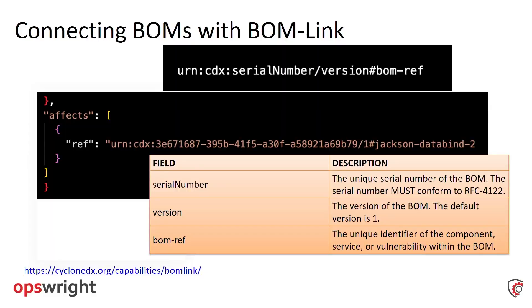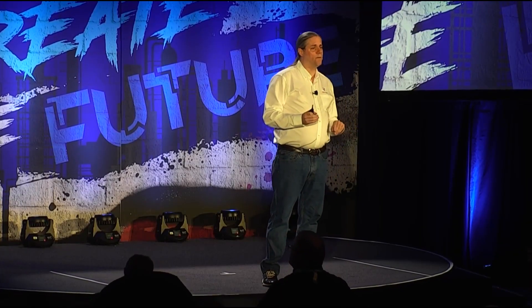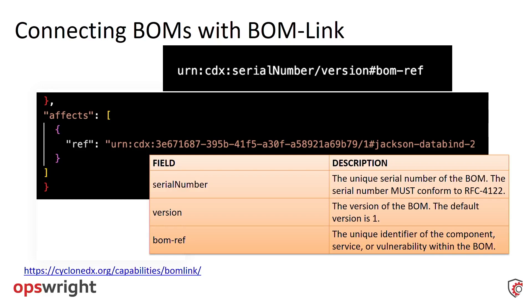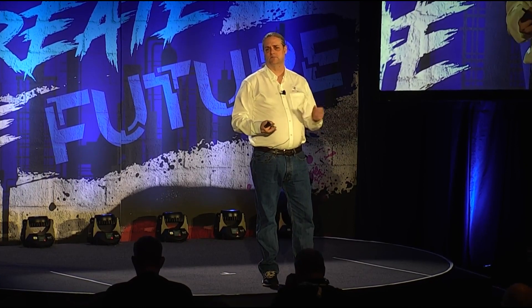Now that we have all these BOM types, how do we gain aggregate understanding? There's a concept of BOM linking — SPDX has it too, though SPDX is largely a software bill of materials approach. BOM linking allows us to create connective tissue between BOMs and establish relationships between components. The CycloneDX model supports linking BOMs through URN addresses and creating reference models between BOM to BOM. It's also very useful to link BOMs to other artifacts from build systems, and everything in the pipeline.